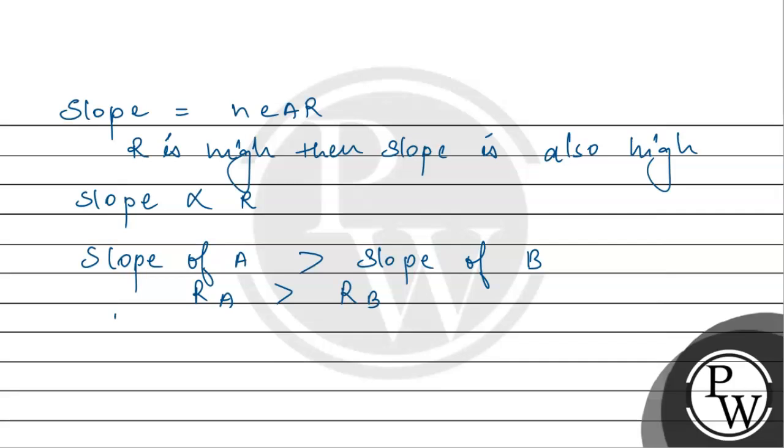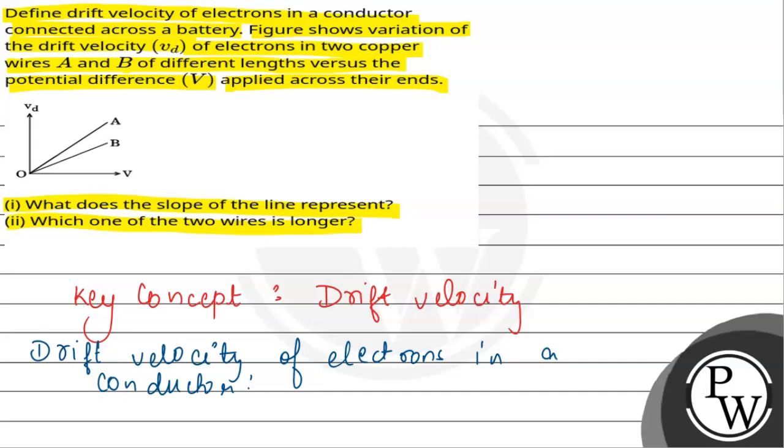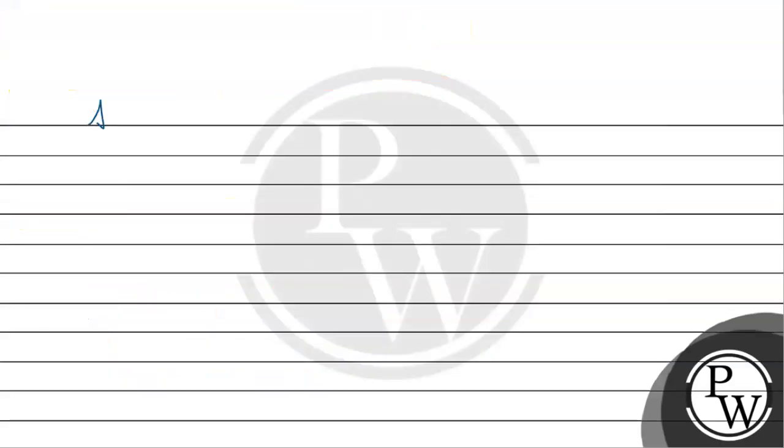So wire A is longer as compared to wire B.